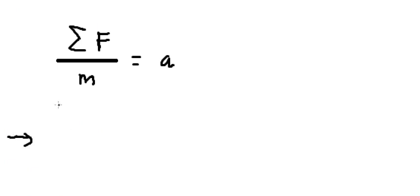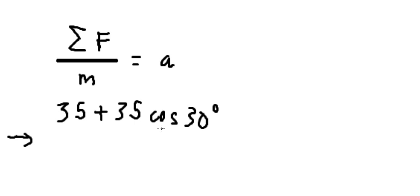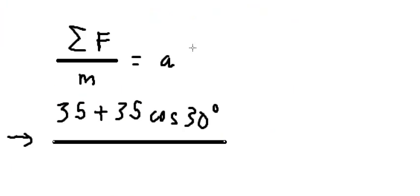So you will have 35 plus 35 cosine of 30 degrees, because this force just supports the sum of the force. That's why we have this, and we divide by m, which is 11.5.